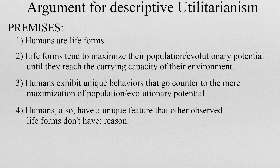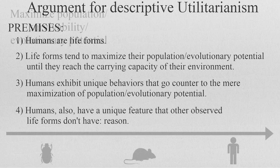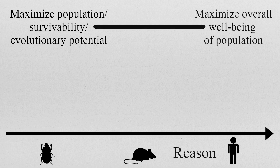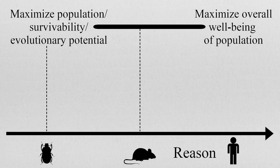We claim that the uniqueness of our capacity to reason explains the unique behaviours we exhibit. The inference we make is that what is actually going on under the hood is that reason modifies the objective of our existent maximisation procedure. It's not that we as a life-form do not have the underlying maximisation mechanism that all other life-forms have. Rather, the underlying mechanism is changed by the presence of reason. It's still a maximisation procedure, but now, instead of the number of individuals, we are maximising for the wellbeing of the species.